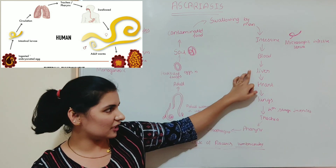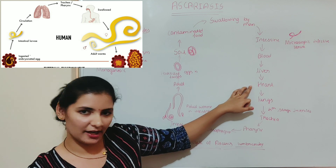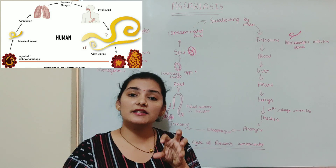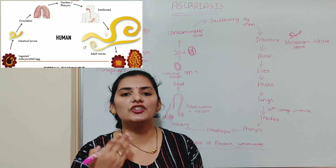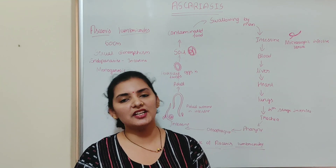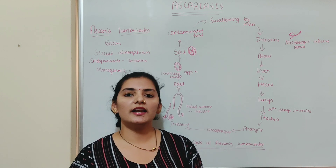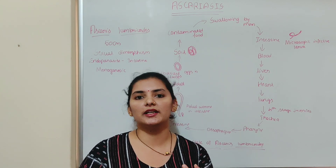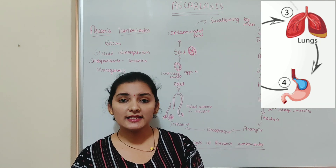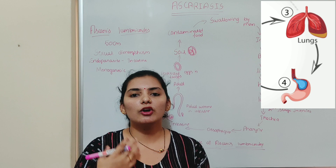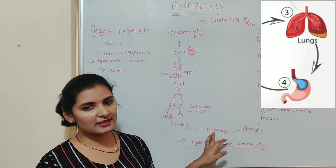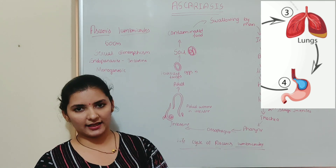First the larva enters the liver, from the liver it takes a short trip to the heart, and from the heart it finally reaches the lungs. In the lungs it enters the alveoli, where it molts twice to form the fourth stage juvenile. At this stage the infected person may experience symptoms like wheezing, shortness of breath, and cough. After staying about 10 days in the lungs, the larvae enter the throat, are coughed up, and swallowed into the esophagus, from where the larva finally reaches the intestine for the second time.